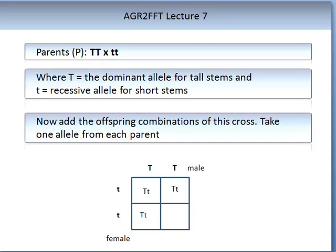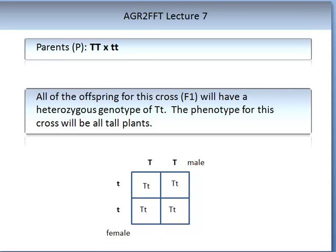Using Mendel's tall and short pea observations, we can show the outcomes of crosses using the Punnett square. In this example, a dominant allele homozygous TT parent is crossed with a recessive allele parent showing short stems. Place the parent genotype descriptions at the top and to the side of the box — capital T's above, lowercase t's to the left. You take one allele from each parent to give the combination. Capital T from the male crossed with lowercase t from the female gives a capital T lowercase t, or heterozygous, which will produce a tall plant.